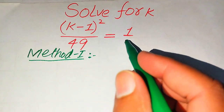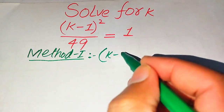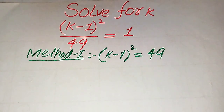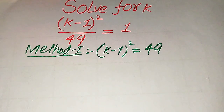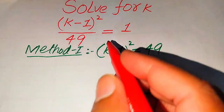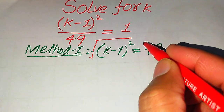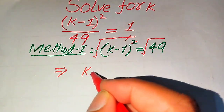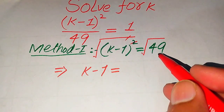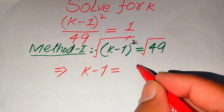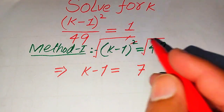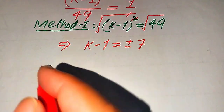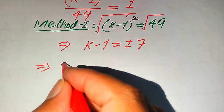We move 49 to the right hand side. When we multiply 49 with 1, it becomes: (k minus 1) whole square equals 49. In the next step, to find the value of k we apply a square root on both sides. The square root cancels the square, so we get k minus 1 equals the square root of 49. Since we apply square root on both sides, we write a plus-minus sign on the right hand side.